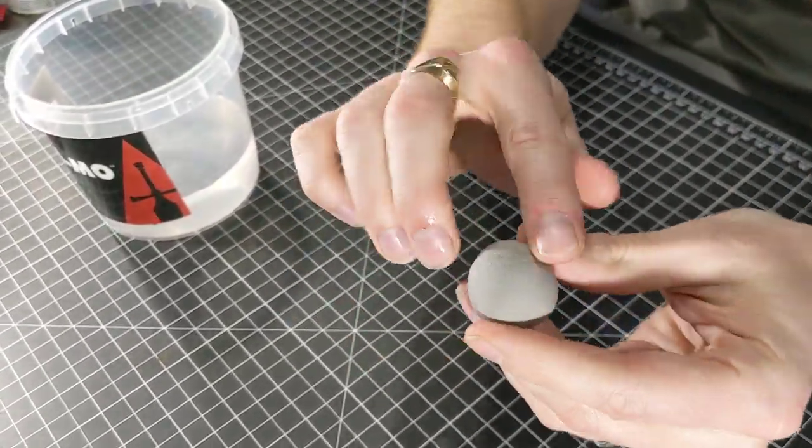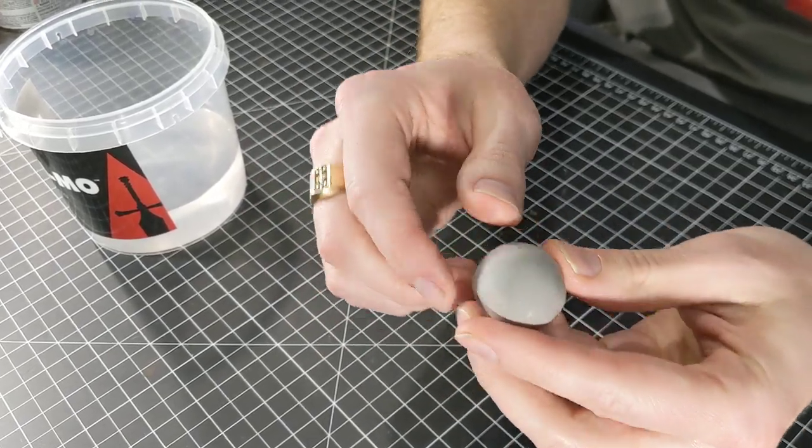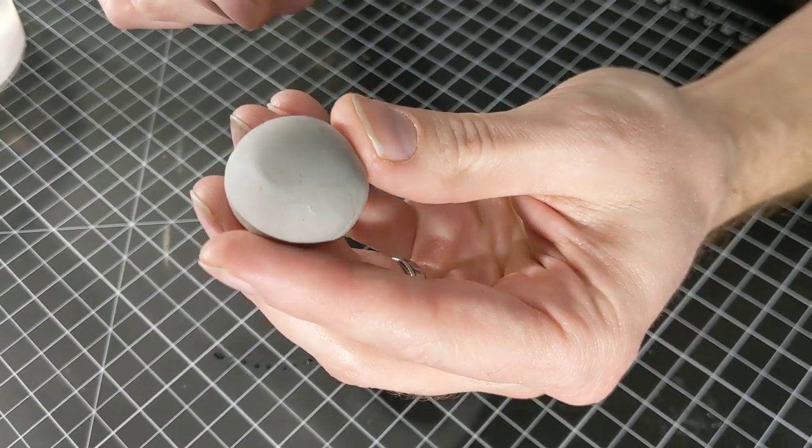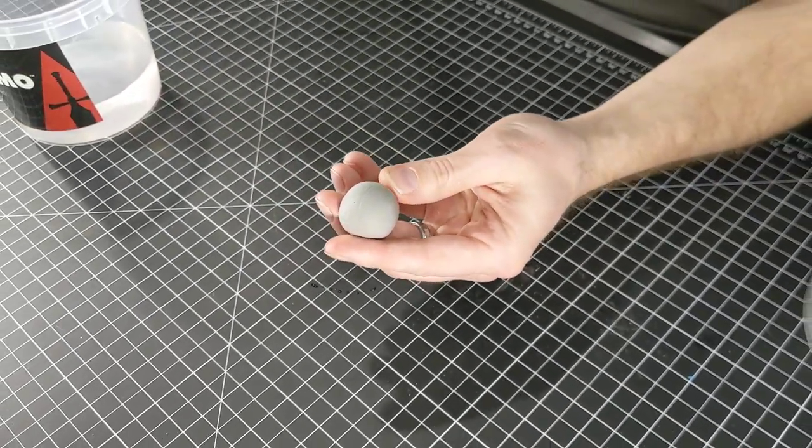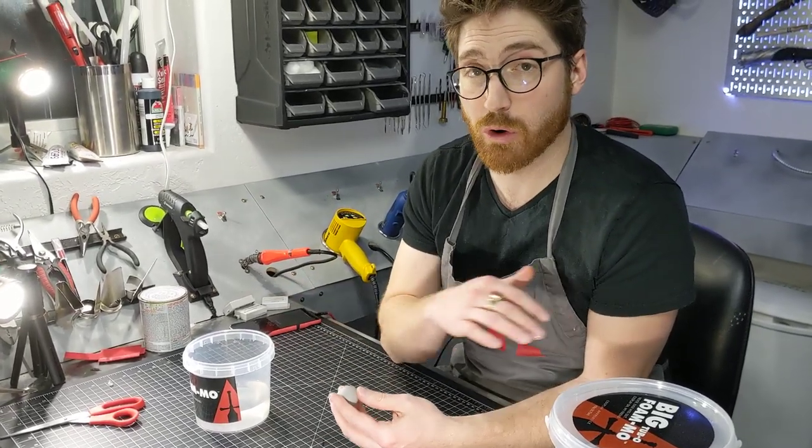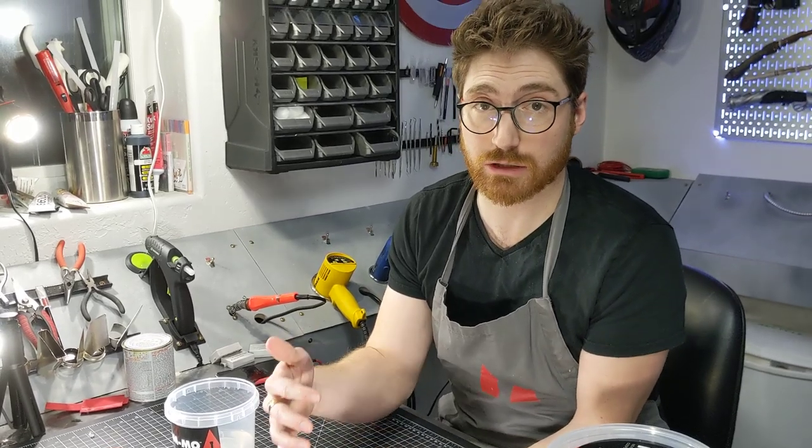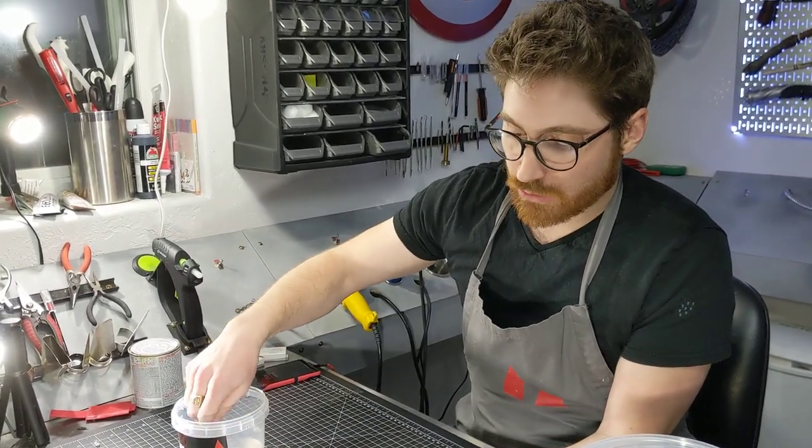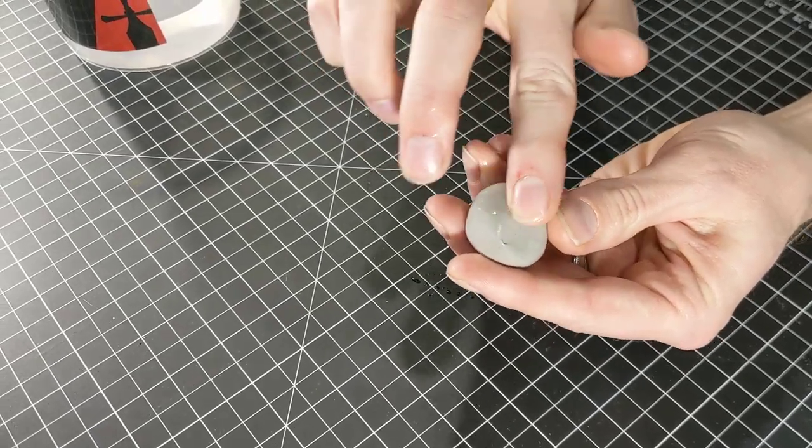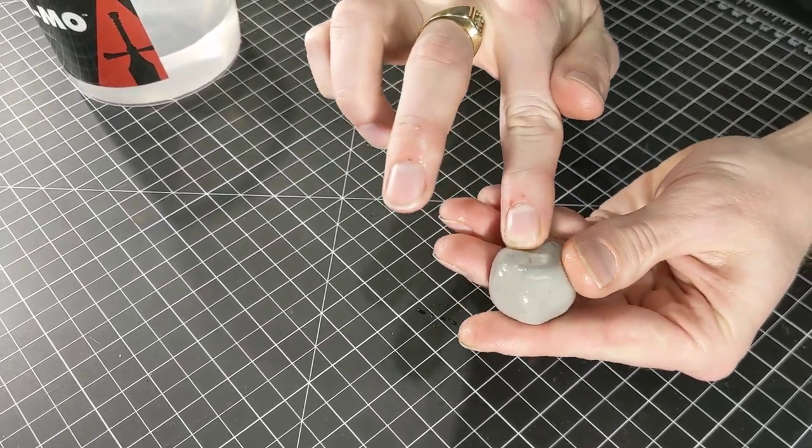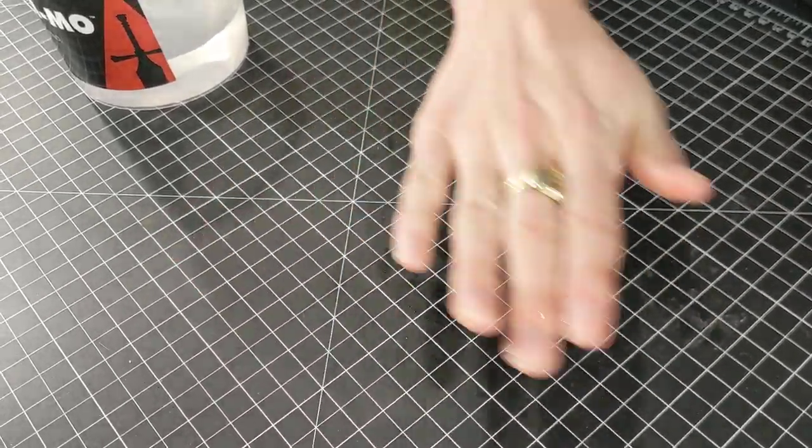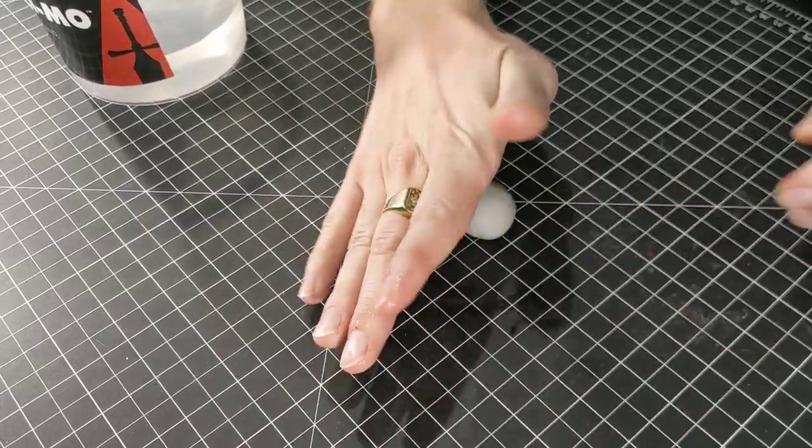Sometimes you can get kind of these seams and different things that show up, right? And then even as I'm just touching that, I don't know if you guys can see, it's taking fingerprints. So what you can do is once you get it into your general shape, and I actually end up doing this like multiple times throughout the process, especially if I'm sculpting something that's a little bit larger. First off, I dip my finger in some water and I'm gonna press in and try to eliminate any of those big seams.